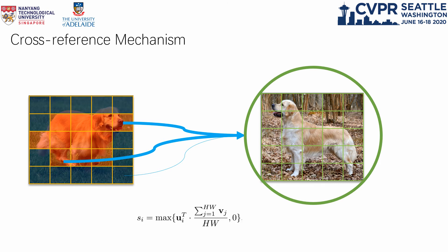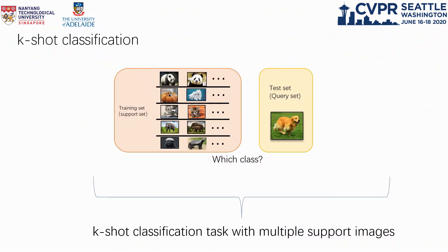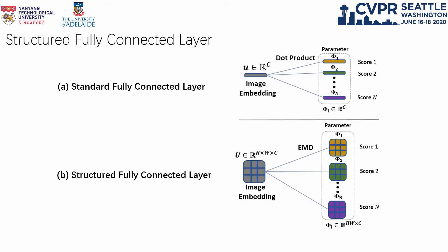When it comes to the K-Shot setting where multiple support images are available, we propose to learn a structured fully connected layer as the classifier to make use of the increasing number of training images. The structured FC layer includes a group of learnable vectors for each class. At inference time, we use the EMD to compute the distance between the image embeddings and the learnable vector set in each class for classification.